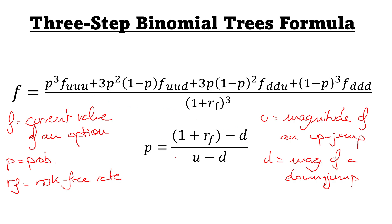FUUU would be the option value when it's gone up three times. FUUD consequently would be the option value when it's gone up twice and down once. FDDU, gone down twice, gone up once. FDDD, gone down three times.